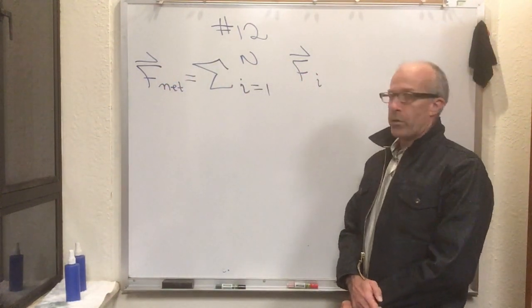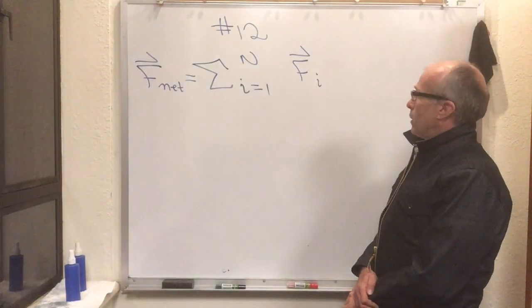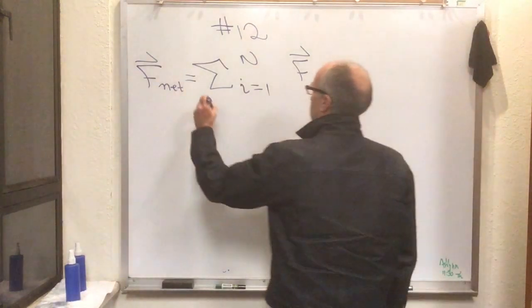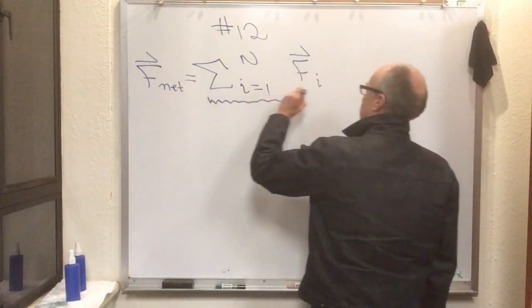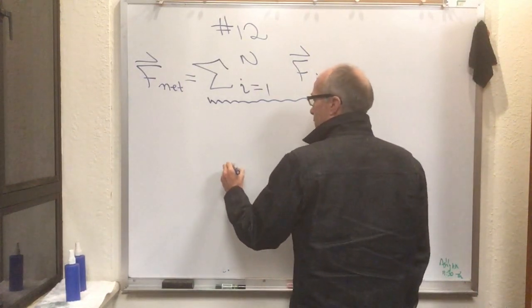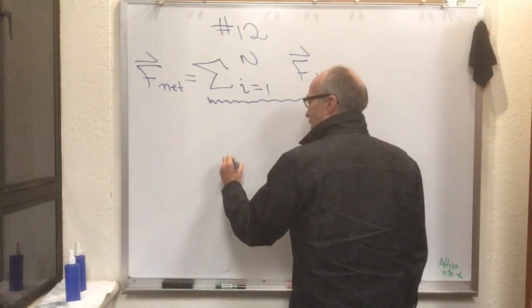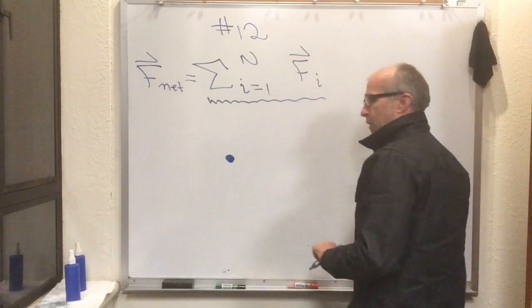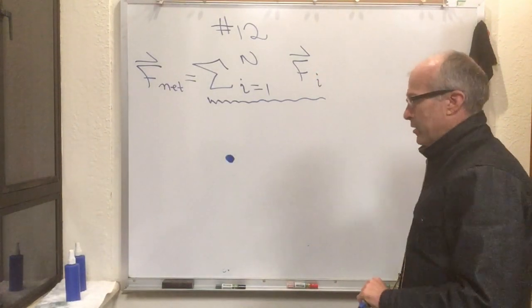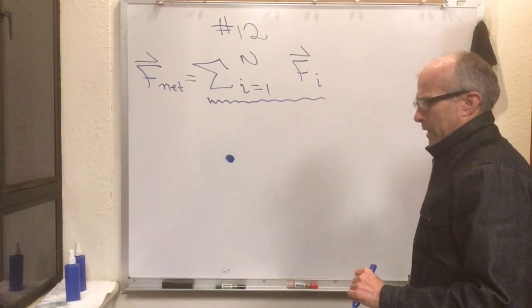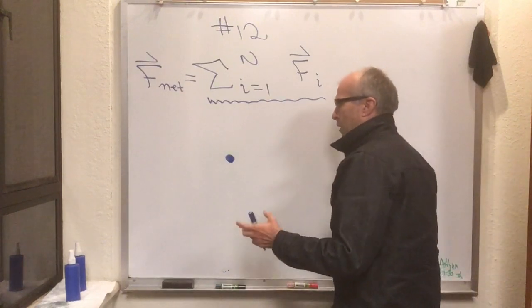Now for those of you that aren't used to a lot of notation like this yet, you'll get used to it. Let's just understand what this says. This says that if you have some object, and for now our objects are going to be particles, this doesn't really work very well on extended objects, objects that are spinning, objects that are compressible.